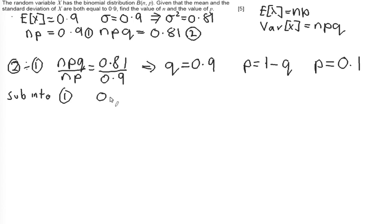So what I get is 0.1n is equal to 0.9. When I divide both sides by 0.1 to solve this equation, what I get is that n is equal to 9. So n is equal to 9 and p is equal to 0.1.